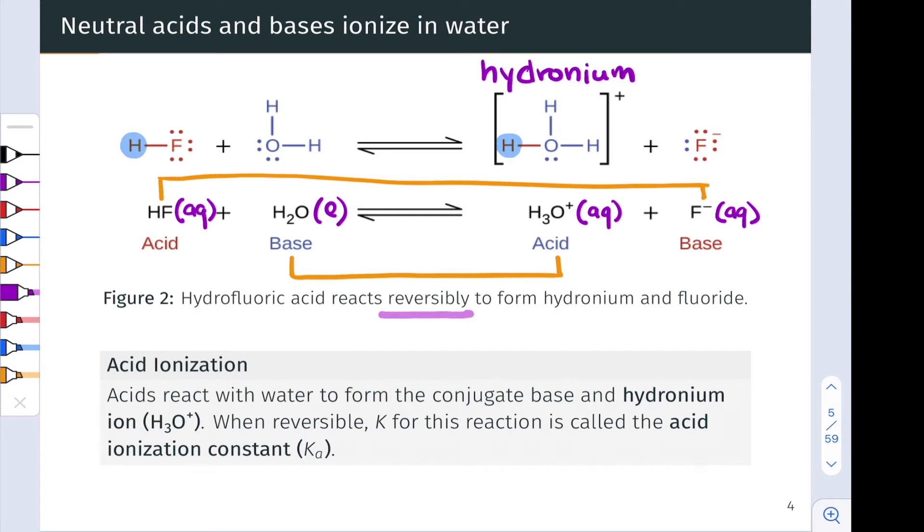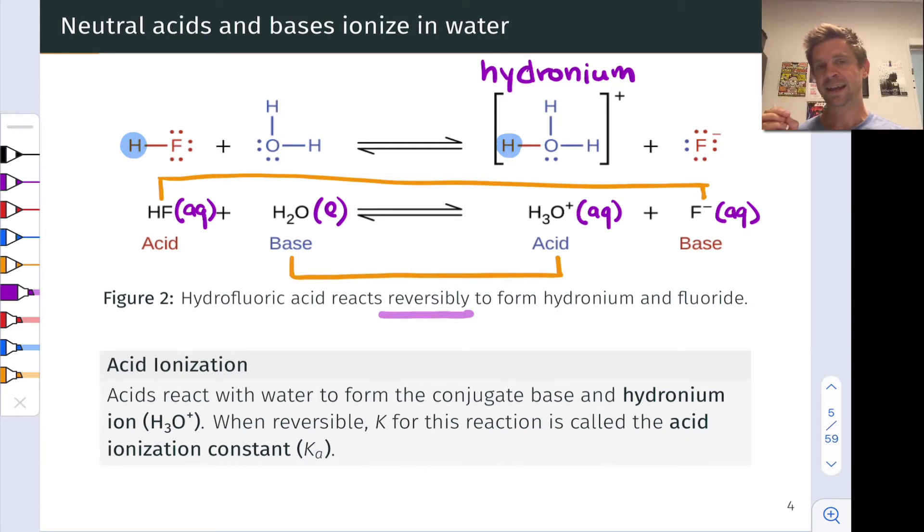Unlike, for example, strong acids you may have seen previously, which react completely with water. Because this is a reversible reaction, it has a K-value, an equilibrium constant that is not infinite, that we can use to characterize the reaction. How far does it go at equilibrium? K gives us a qualitative, and in many cases quantitative, idea about this.